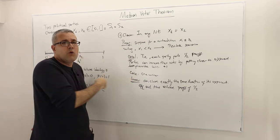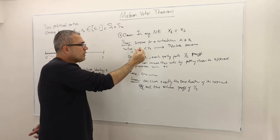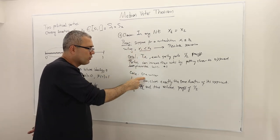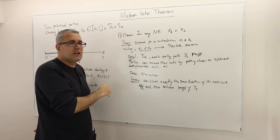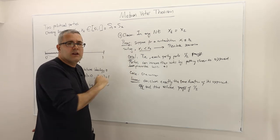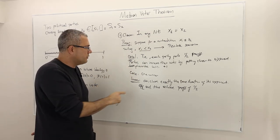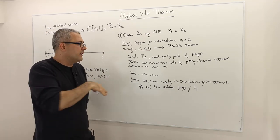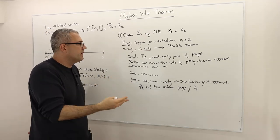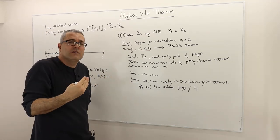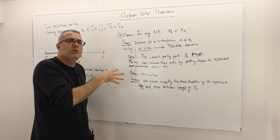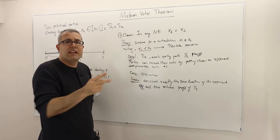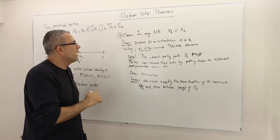These are the only two cases whenever x1 is less than x2: either a tie or one winner. In case of a tie, any player has an incentive to deviate. In case of one winner, the loser has an incentive to deviate. So there will always be someone who regrets the outcome, and therefore this cannot be a Nash equilibrium. In any Nash equilibrium, x1 must equal x2.